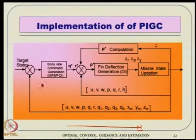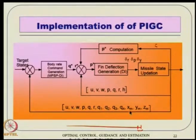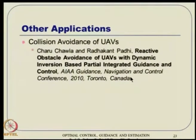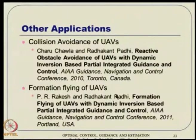The entire body rate command generation can be thought of as an outer-loop guidance. All variables going into the six-DoF equation must be fed back. q_1, q_2, q_3, q_4 are typically quaternion components. Other applications include collision avoidance of UAVs and formation flying of UAVs using similar concepts with different techniques. The way it is implemented for the missile problem differs in detail but the concept remains very similar.